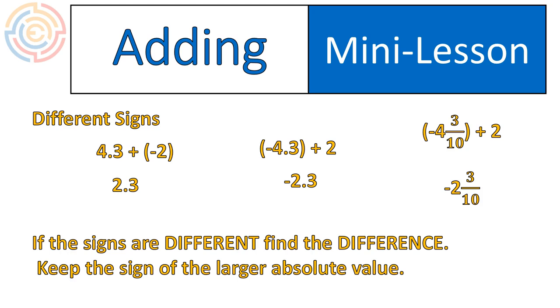If the signs are different, you take the two numbers and subtract them or find the difference. You keep the sign from the larger absolute value. Or in other words, if there are more positives, your final answer is going to be positive. If there's more negatives, your final answer is going to be negative.